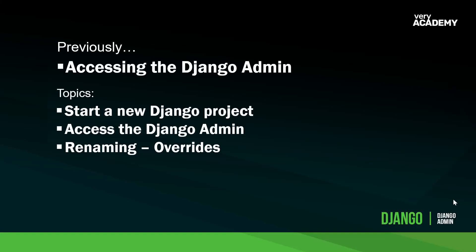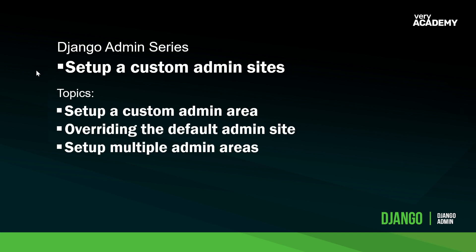In the previous tutorial we created a simple project and went through the stages of accessing the Django admin and doing some basic overrides. In this tutorial we're going to take that one step further and set up our own custom admin sites. We'll go through three steps: setting up a custom admin site, overriding the default admin site, and setting up multiple admin areas.